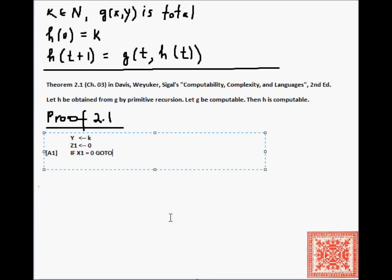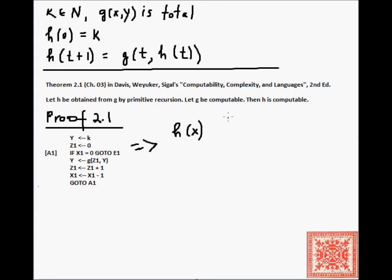y is assigned the value of k, z1 is assigned the value of 0, if x1 is 0 then we exit, go to e1. Otherwise, since g is computable by assumption, we assign the value of g applied to z1 and y to y. Then increment z1 by 1 and decrement x1 by 1, and then go to a1 to check whether x1 is 0 yet. The claim is that this program actually computes h of x. To see this, we can make a formal inductive proof, but it is sort of intuitively obvious. So let's go through a couple of cases to get a feel for how this program works and what it computes.